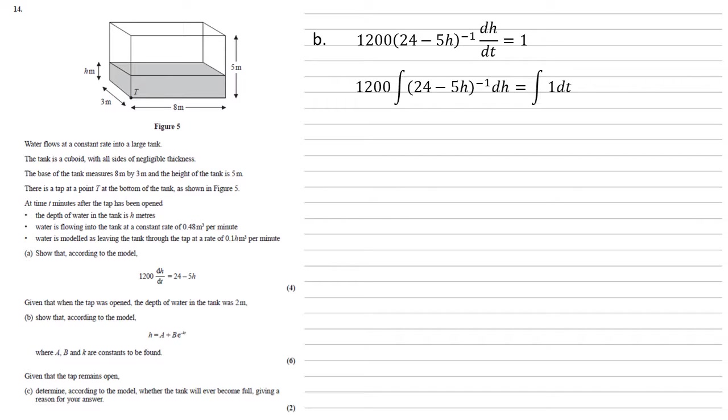So we've got a function of h to the minus 1, so we're looking at ln. It's going to be ln of 24 minus 5h. But if you think what happens if we were to differentiate ln by the chain rule, that minus 5 from the h would come out. So we need to multiply by minus a fifth to cancel that out again. So we'd end up with the 1,200 from the beginning, times by a minus fifth ln, 24 minus 5h, plus c, because it's an indefinite integral. And on the right-hand side, the integral of 1 dt is just t. Now, if I just switch these around so that the t is on the left, and we multiply the 1,200 by the minus fifth, we end up with t is equal to minus 240 ln 24 minus 5h plus c.